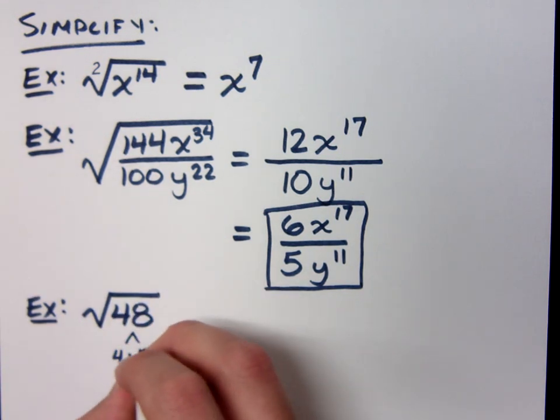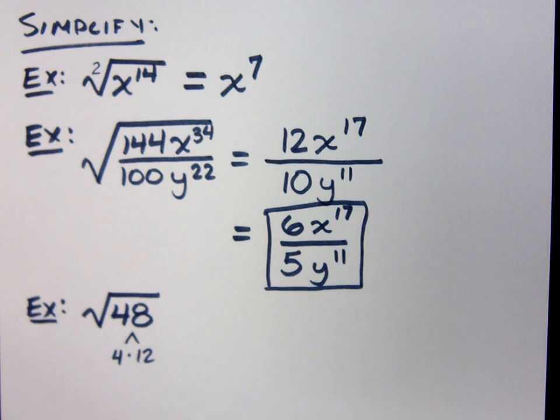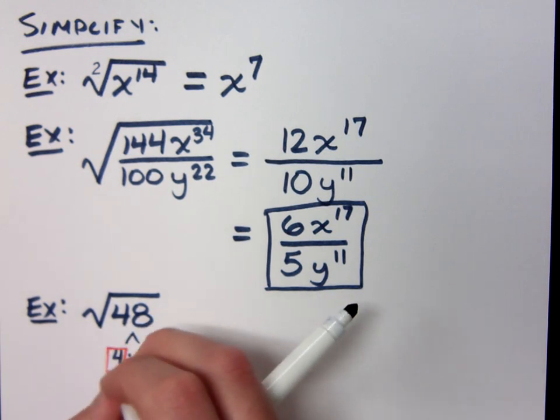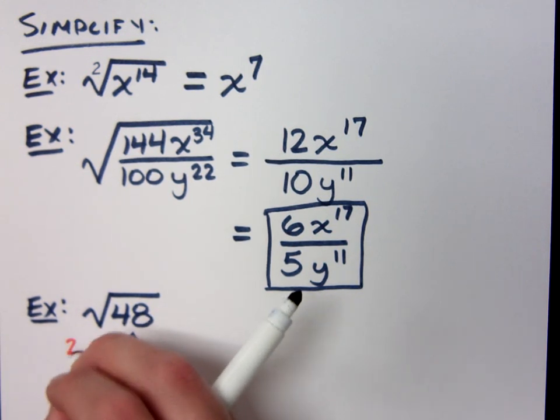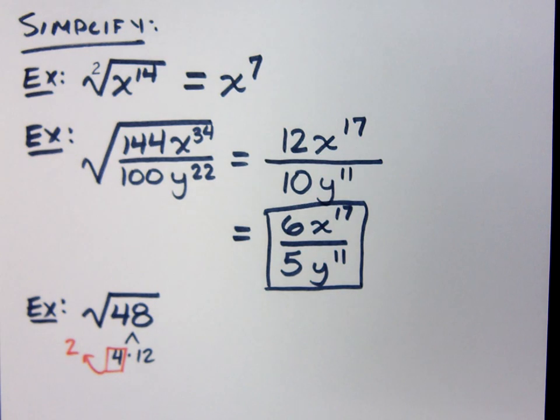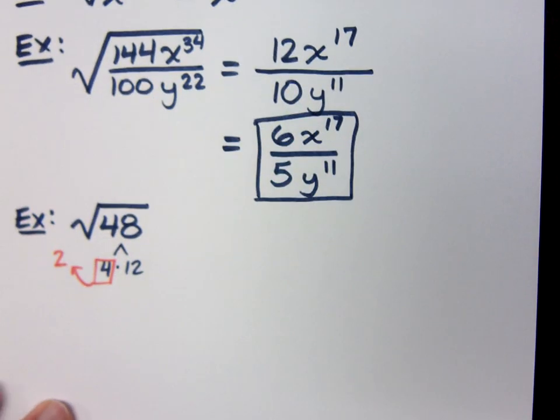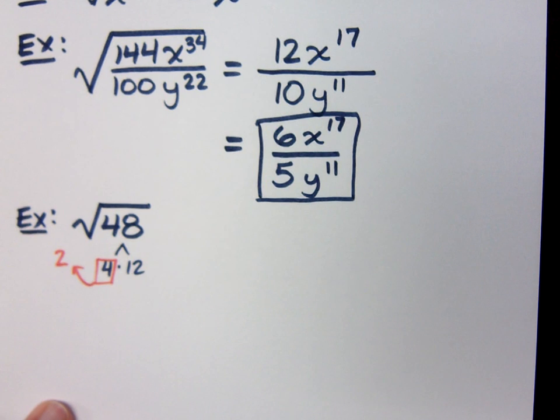I could do 4 and 12. 4 is a perfect square. And what does this give me on the outside? That would give me a factor of 2, but that's not all. I've got 12, which is not completely broken down. How do I finish breaking him down?